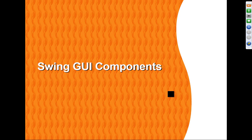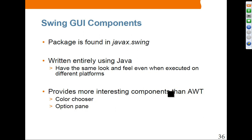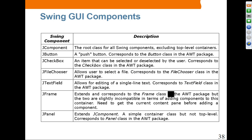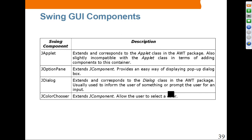The Swing GUI components — like buttons (JButton), JTextField, and things like that — are all under the package javax.swing. They are entirely written in Java. You can also have interesting components such as color chooser and option pane, all provided for you. Everything that starts with J is from Swing. JComponent is the root class for all Swing components: JButton, JCheckbox, file chooser, text field, JFrame, JPanel, JApplet, JOptionPane — which we have used before.